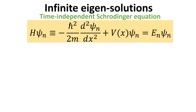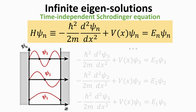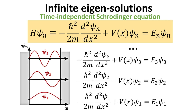The time-independent Schrödinger equation, as shown again here in the yellow box, admits infinite eigensolutions, where psi n is the eigenfunction associated with the eigenvalue E n. Here we illustrate with an example where the potential V describes a rectangular well. The solutions admit different discrete energy levels E1, E2, and so on, each with a corresponding wave function psi 1, psi 2, and so on. Each of these eigensolutions can be expressed as a stationary state solution to the Schrödinger equation. In the remaining video, we show how the general solution to the time-dependent Schrödinger equation can be constructed from these eigenfunctions psi n.